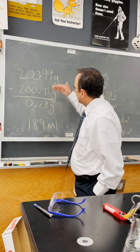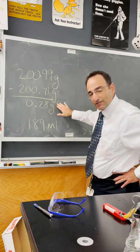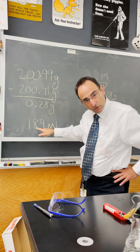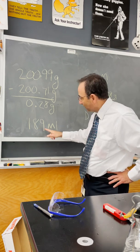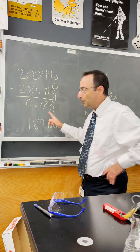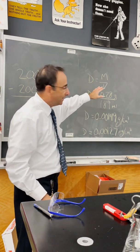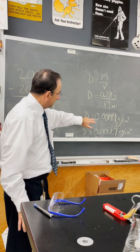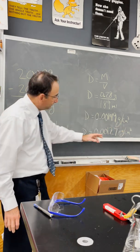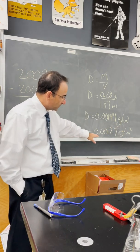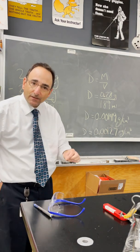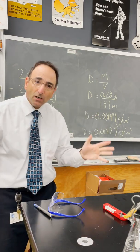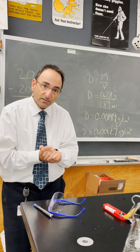So we have our starting mass and our ending mass, giving us a difference of 0.28 grams that we pulled out of the container. That resulted in a volume of 189 milliliters of water being pulled in. When we do our density calculations — mass divided by volume — that gives us a measured density of air of 0.00149 g/mL. The actual density of air is 0.00127, giving us a difference of only two ten-thousandths of a gram per cubic centimeter. Remarkably good results with a fairly rudimentary system of measurement.